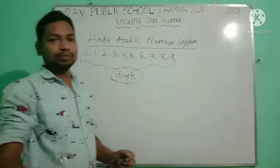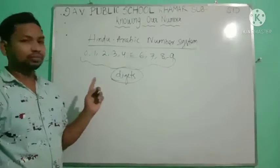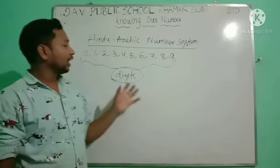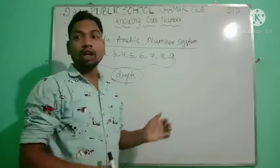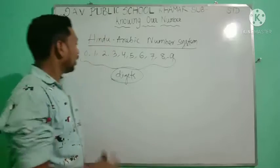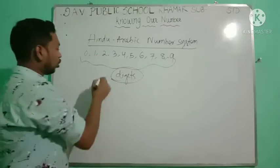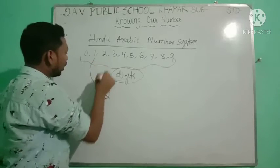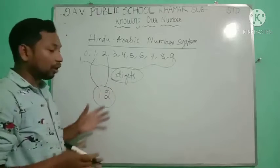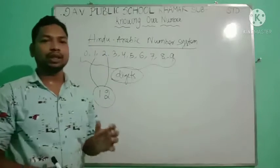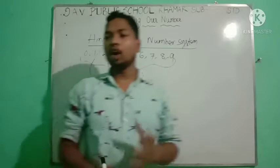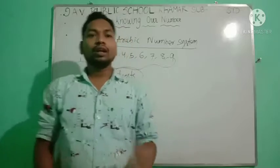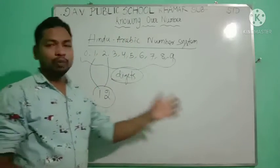These symbols are also called digits. The representation of a number by a group of digits is called a numeral. Expressing a number in numerals is called numeration.